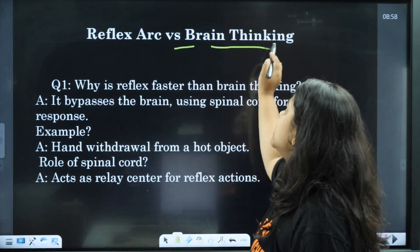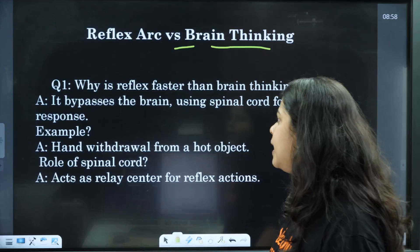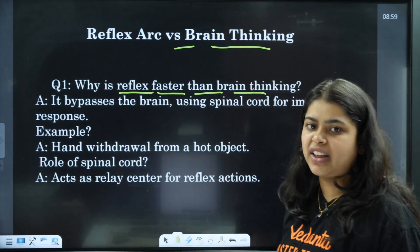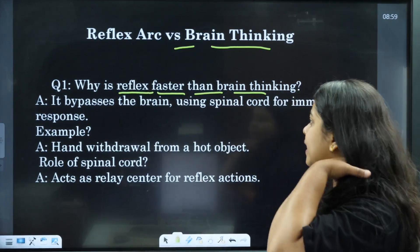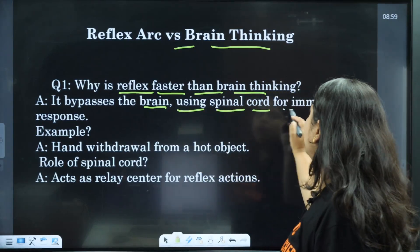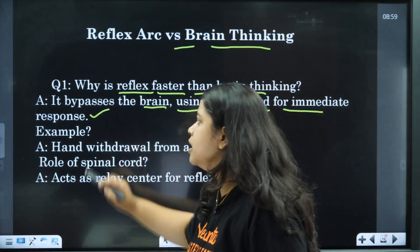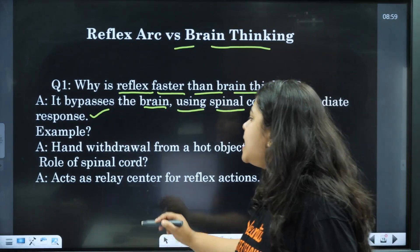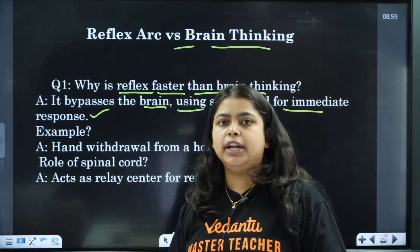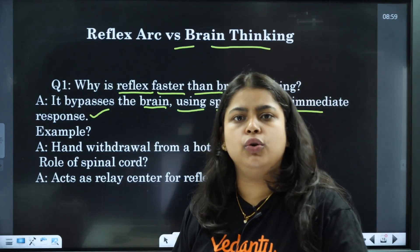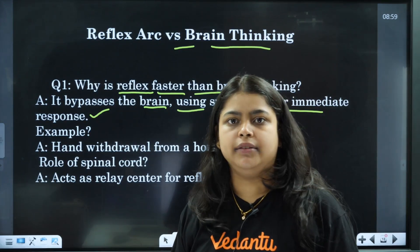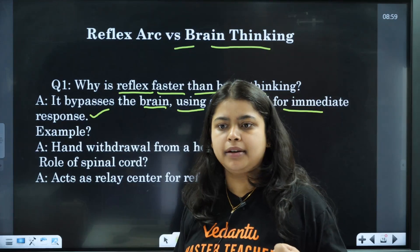Next on reflex: why is reflex action faster than brain thinking? It bypasses the brain using the spinal cord for immediate response. Example: hand withdrawal from a hot object — without your brain thinking, you will immediately pull it away.